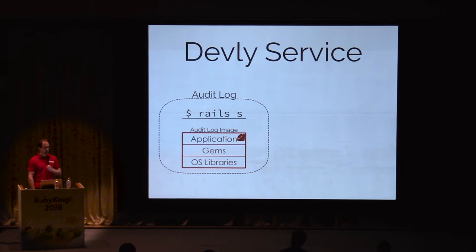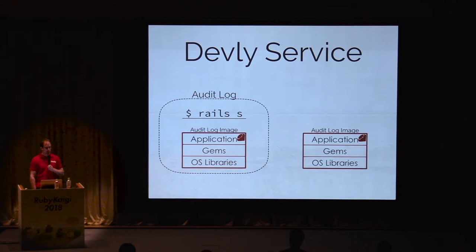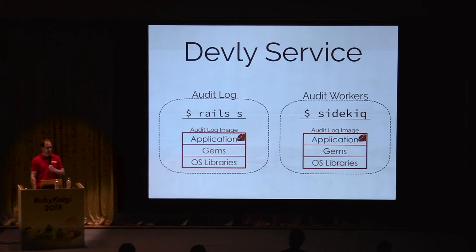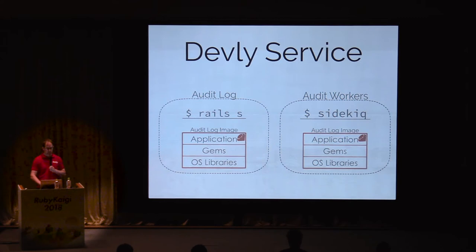This service runs the audit log API, but we also have some Sidekiq background jobs to run. To make it easier to read our logs, let's use a separate service to run these background jobs. Since the background jobs use all the same models and databases as our application, we can use the same image. We create the audit workers service and run the Sidekiq command instead of the Rails server command. When we start the audit log API service, it only runs Rails server, and when we start the audit workers service, it only runs the background jobs. This separation helps make development more accessible because the logs are separate, and we can test our audit workers in complete isolation from the API.